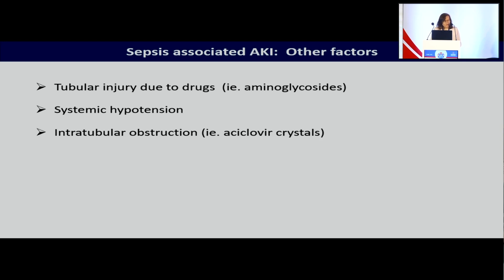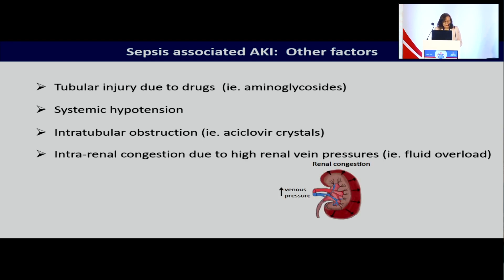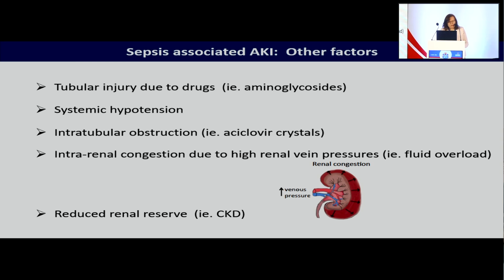Patients may have other reasons causing acute kidney injury, like obstruction — which may be extra-renal but also could be intratubular. There may be a contribution from renal congestion as a result of right-sided heart failure or just simple fluid overload. And finally, patients may not start off with normal kidney function — they may have very reduced kidney function as a result of CKD. This means it's impossible to tease out whether AKI was sepsis-induced or sepsis-associated, and the safest term is probably sepsis-associated acute kidney injury.